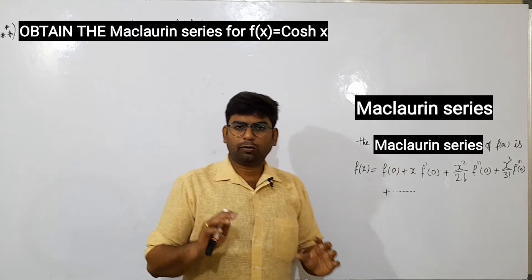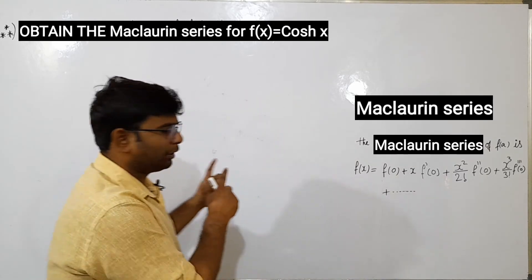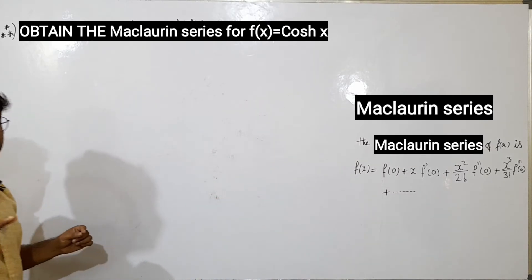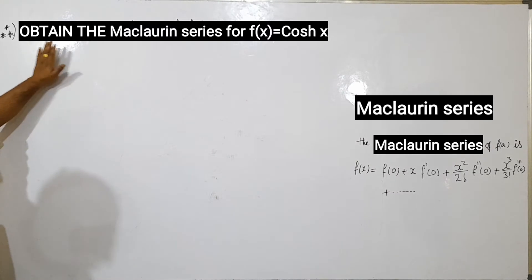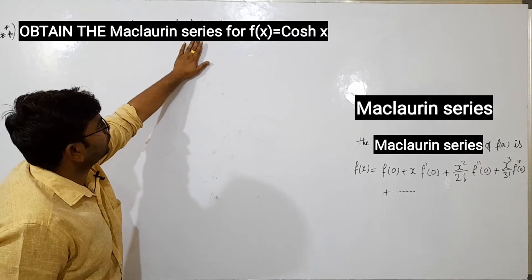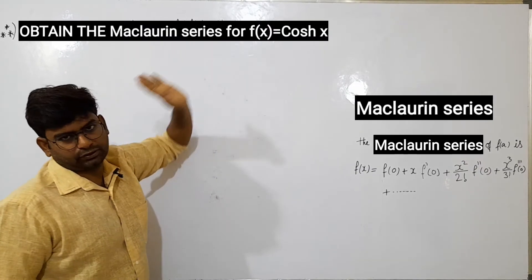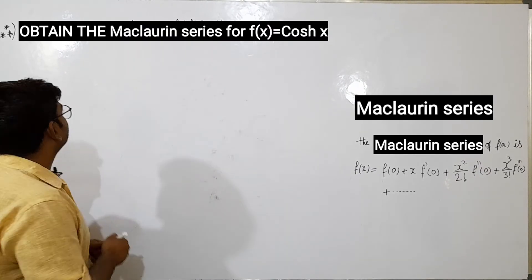So I hope this is simple and easy. Now obtain the Maclaurin series for f(x) equals cosh(x).